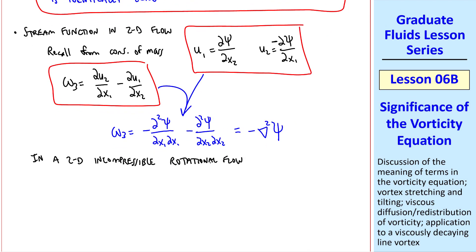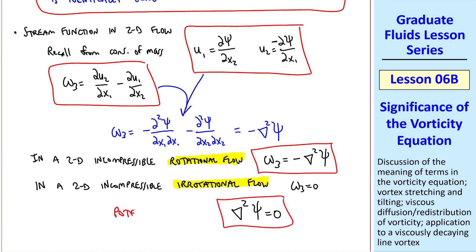The result is that in a 2D incompressible rotational flow, omega 3 is minus del squared Psi, whereas in a 2D incompressible irrotational flow, omega 3 is zero, and therefore del squared Psi is zero, which is what we use in potential flow. You can think of this equation as kind of an extension of potential flow or rotational flow.